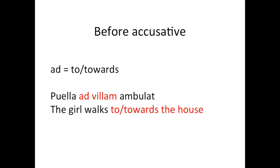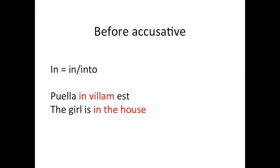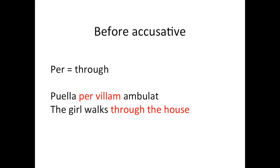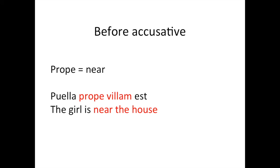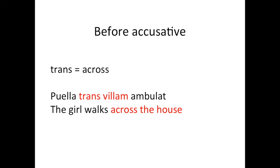'Ad' is the first one — it means 'to' or 'towards.' For example: 'puella ad villam ambulat,' which means 'the girl walks to, or towards, the house.' Next, 'in,' which means 'in' or 'into' — this is actually the exception I mentioned, as it goes in front of both accusative and ablative. Example: 'puella in villam est,' or 'the girl is in the house.' Then 'per,' which means 'through': 'puella per villam ambulat,' the girl walks through the house. 'Prope' means 'near': 'puella prope villam est,' the girl is near the house. And 'trans' means 'across': 'puella trans villam ambulat,' the girl walks across the house.